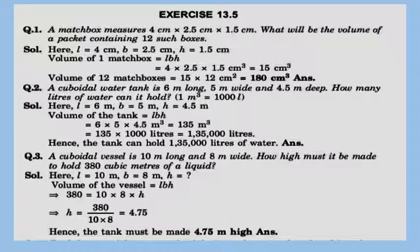A cuboidal vessel is 10 m long and 8 m wide. How high must it be made to hold 380 cubic meters of liquid? Here the volume is given, length is given, breadth is given — use the formula, substitute the values, and calculate. You will get height as 4.75 meters.